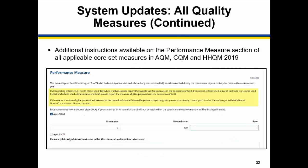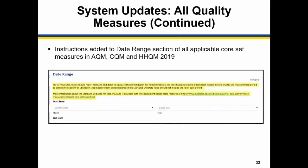Additionally, further instructions were added to the Performance Measure section to provide guidance on what to report in the denominator field and in the Additional Notes and Comments section. Instructions were added to encourage users to explain large increases or decreases to the Rate or Measure-eligible population. Instructions were also updated in the Date Range section of all applicable core set measures.